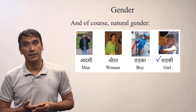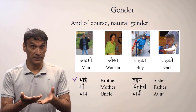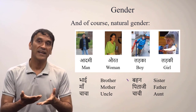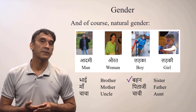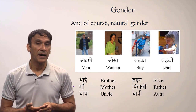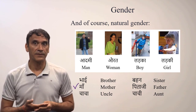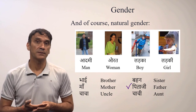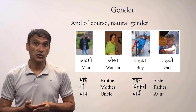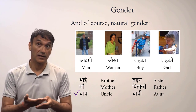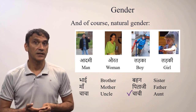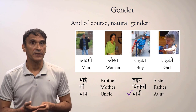Bhai (brother) is masculine. Behen (sister) is feminine. Maa (mother) is feminine. Pitaji (father) is masculine. Chacha (uncle) is masculine. And chachi (auntie) is feminine.